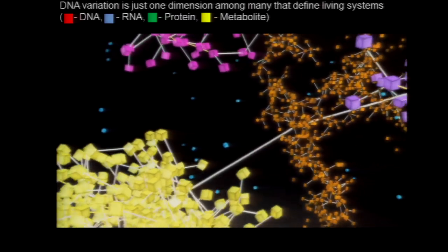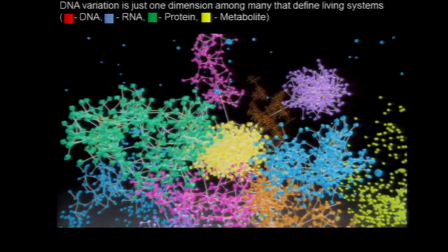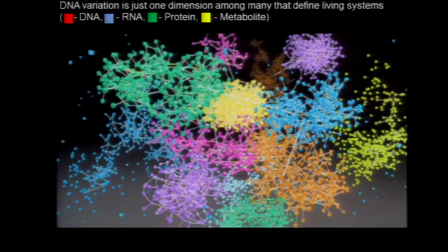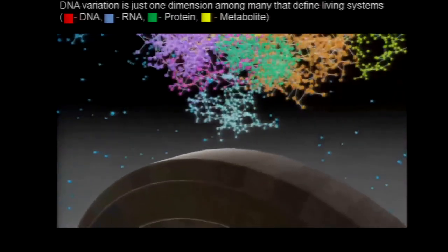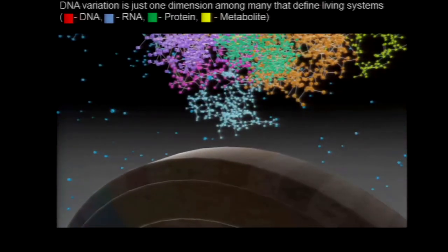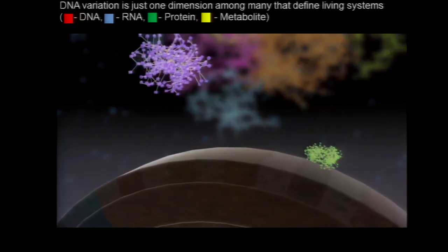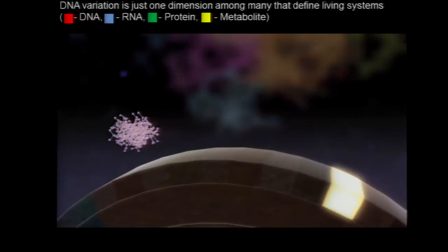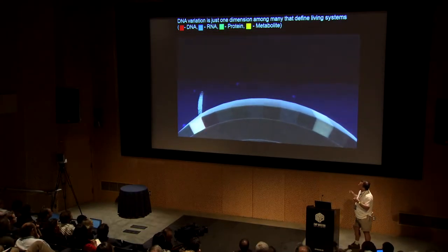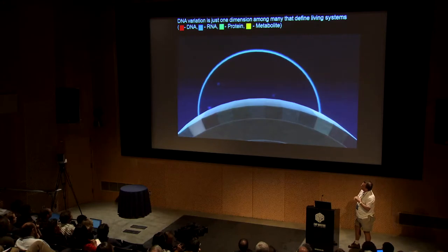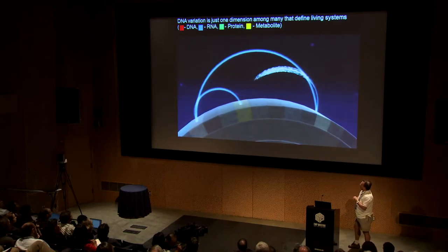Once these networks form, they're not isolated. They're interacting as a system of networks of networks to define the coherence of a living system. Once we have these fundamental units — sub-networks defining biological processes that underlie the phenotypes we care about — we can get away from the single-gene view of disease and start thinking about these networks as functional units and how change in one can cause changes in another.